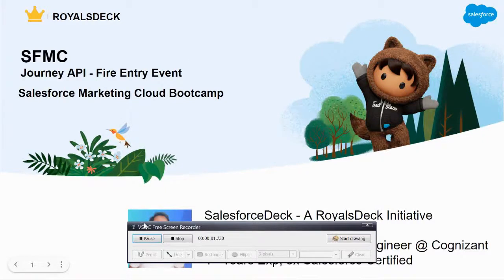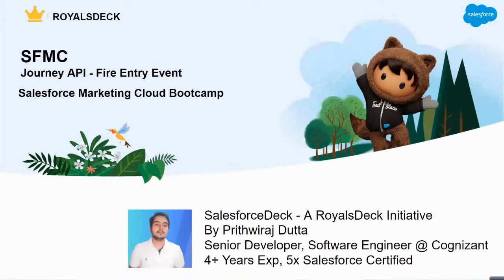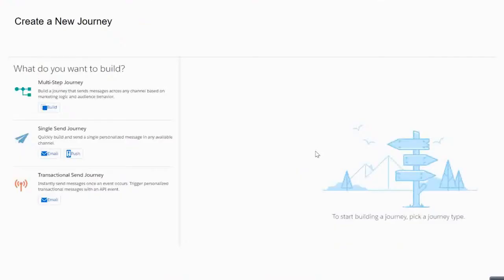Hi everyone. In the first part of this video we made an API call from Postman and triggered a journey through the Fire Entry Event API. In this part we will do the same but using a Cloud Page and some SSJS code.